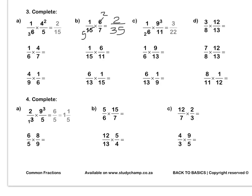Question C: in this example, I've simplified the 9 and the 6 by dividing both by 3. 9 divided by 3 is 3, and 6 divided by 3 is 2. You multiply out to get the final answer. Let's do D together. We can simplify the 12 and the 8 by dividing both by 4. 12 divided by 4 is 3, and 8 divided by 4 is 2. Then you multiply out to get 9 out of 26.